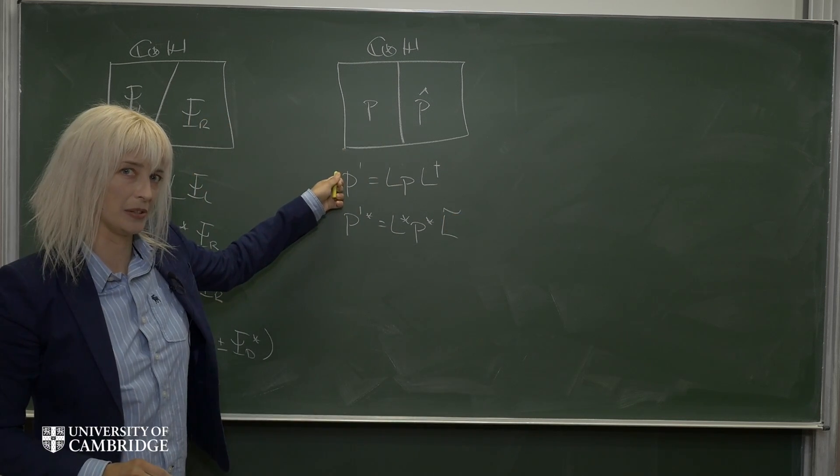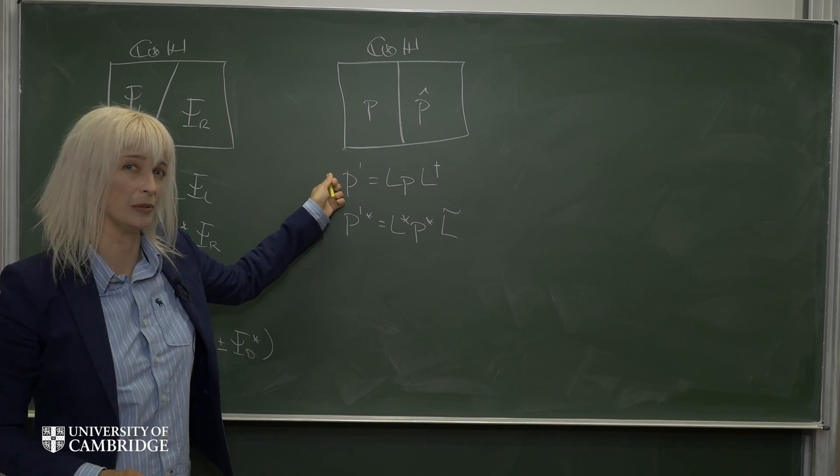So this is something that might actually look familiar to you. We often write down four vectors in terms of two-by-two matrices.